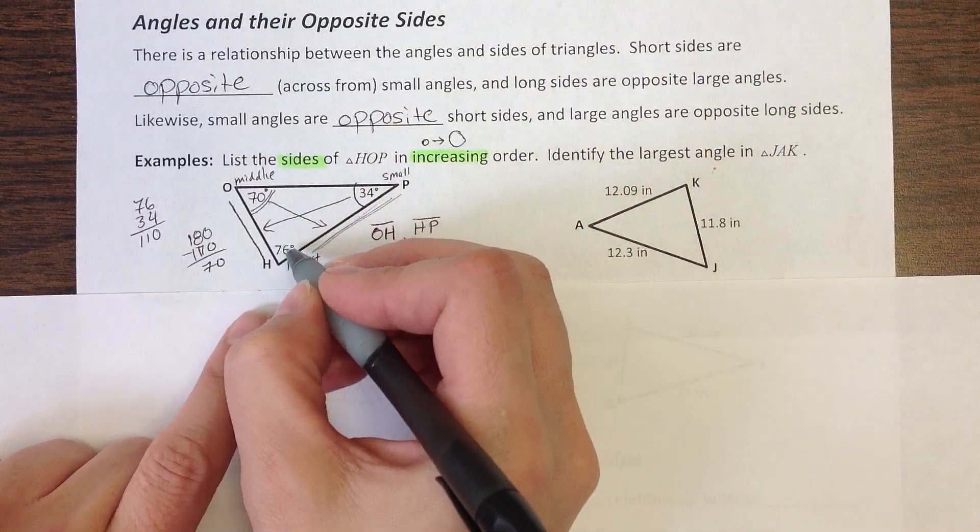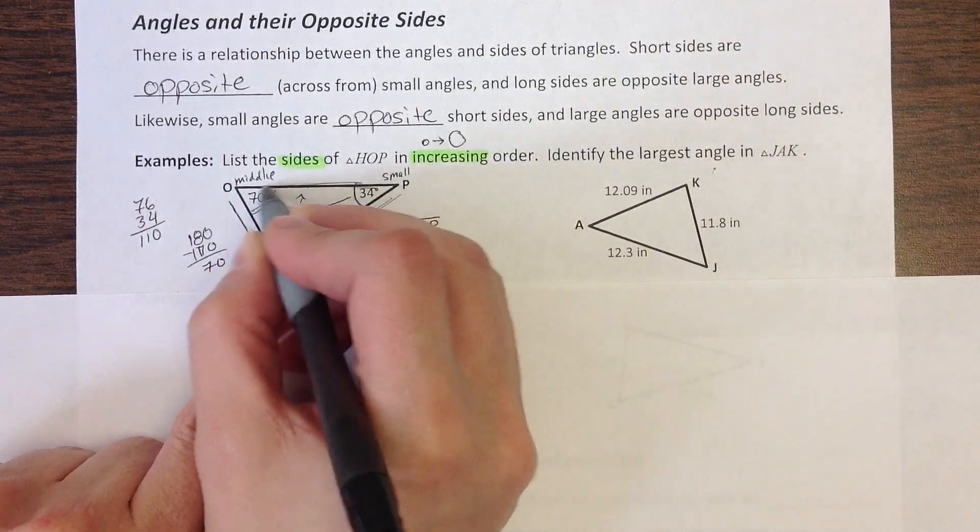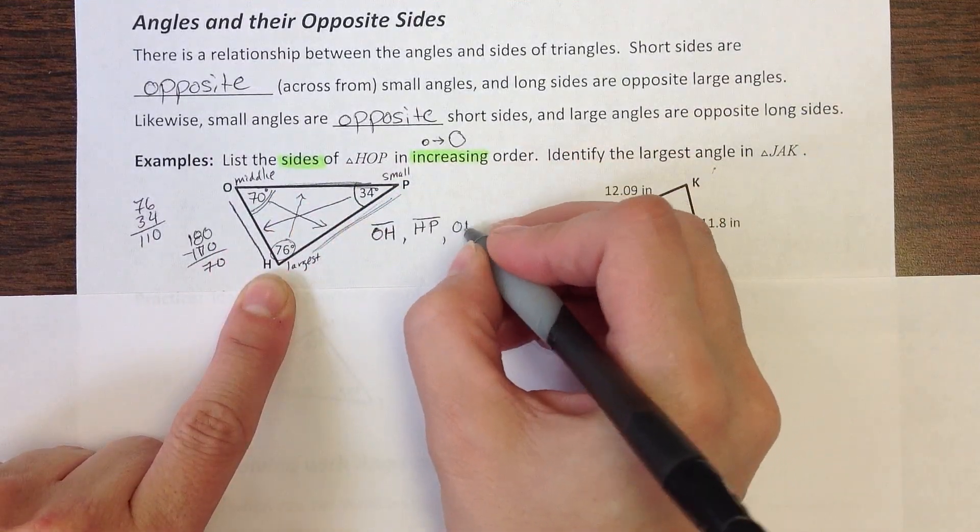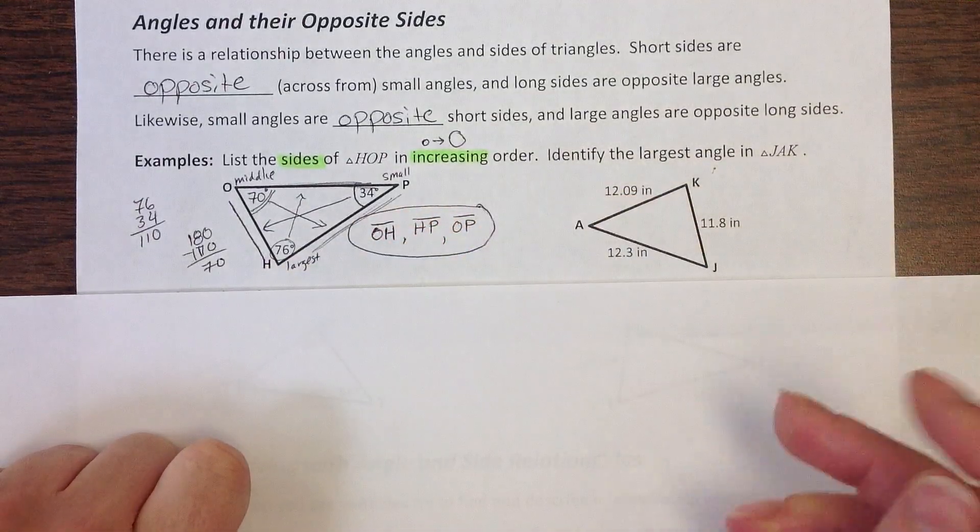And then my largest angle right here at 76. If I go opposite that, I find this side, OP. So there are my sides in increasing order.